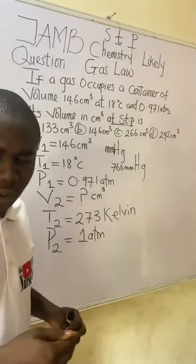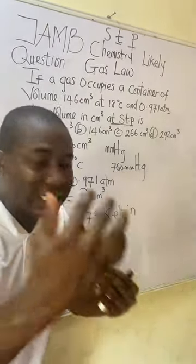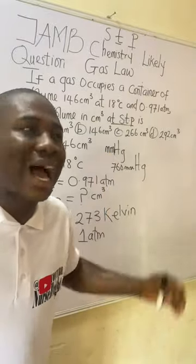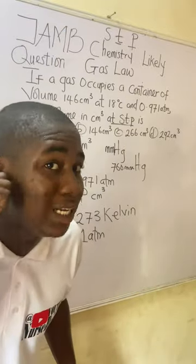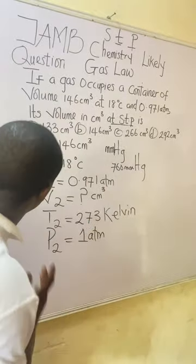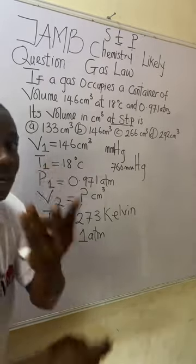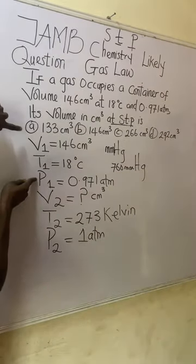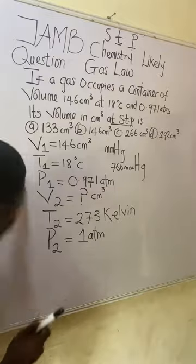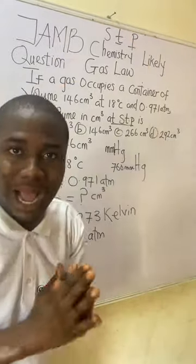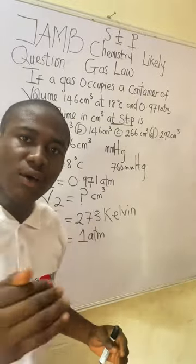Since we are dealing with three variables — volume, temperature, and pressure — we use the general gas equation. If we only had temperature and volume, we would use Charles' law; if only pressure and volume, Boyle's law. But because all three are present, we use the general gas equation.